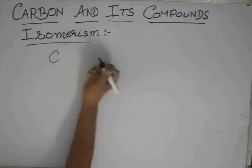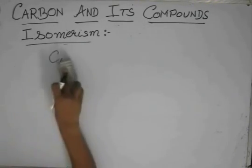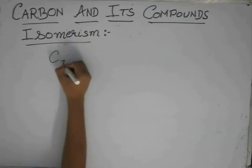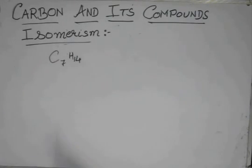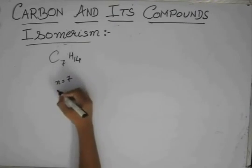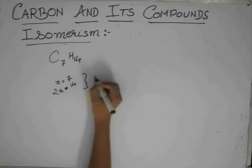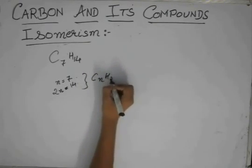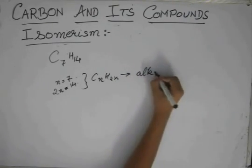The important thing about ring-chain isomerism is when you are given the formula, suppose C7H14, and you are asked to identify what type of compound is it. You will first try this. N is 7 and 2N is 14. So it is in the form CNH2N. So it should be an alkene.